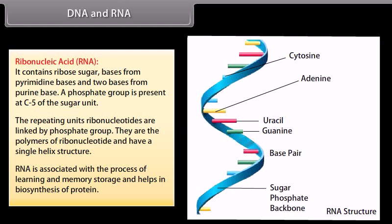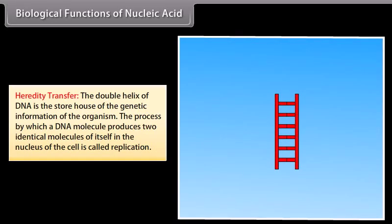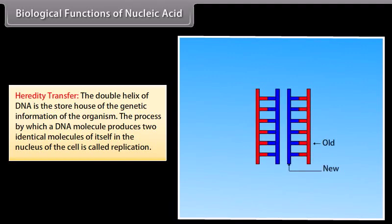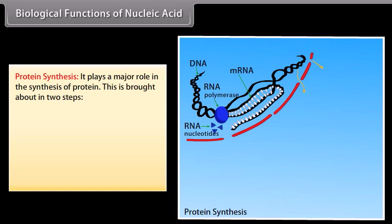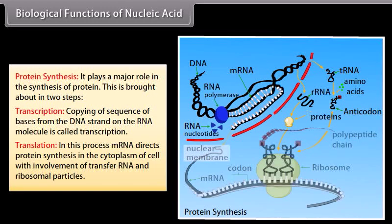RNA is associated with the process of learning, memory storage, and helps in biosynthesis of protein. Biological functions of nucleic acids: Heredity transfer — the double helix of DNA is the storehouse of genetic information; DNA replication produces two identical molecules in the nucleus. Protein synthesis occurs in two steps: transcription (copying the sequence of bases from the DNA strand onto an RNA molecule) and translation (mRNA directs protein synthesis in the cytoplasm with involvement of transfer RNA and ribosomal particles).